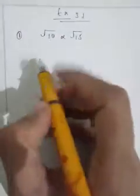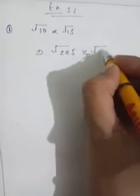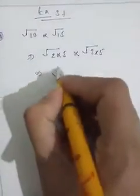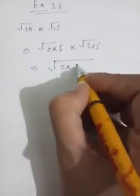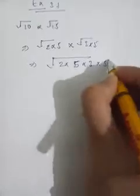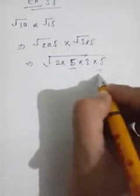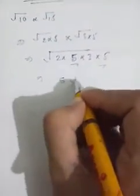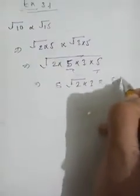Now let's come to Exercise 3.1. We have to find the value of root 10 times root 15. Root 10 can be written as root of 2 times 5, and root 15 as root of 3 times 5. Together this gives the square root of 2 × 5 × 3 × 5. There is a pair of 5, so 5 comes out of the root, leaving root of 2 times 3. The answer is 5 root 6.